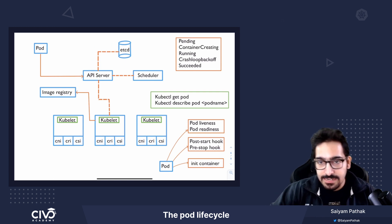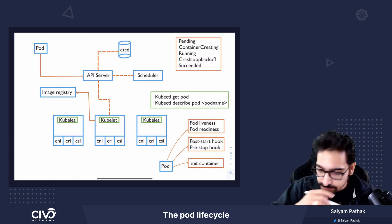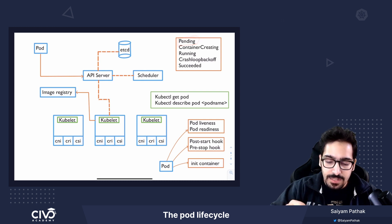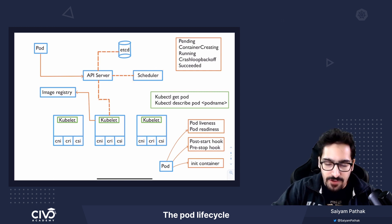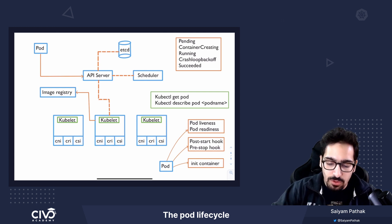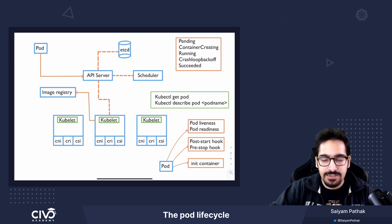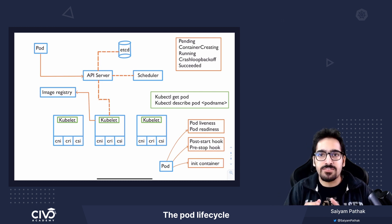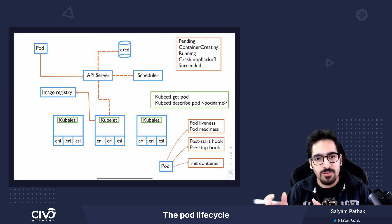After it is persisted, it goes to the pending state. Now the scheduler pitches in and it tries to find the best match for the node where the pod has to be spawned. It will go through the cluster and find out the best fit node based on resources, and also based on whether the image is already present on a node, because that has some sort of preference.